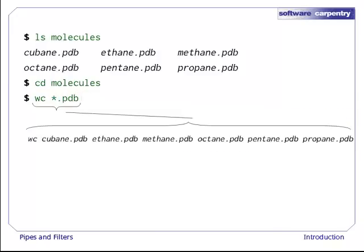The shell does this before wc runs, so the actual command is wc, cubane.pdb, ethane.pdb, and so on.